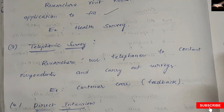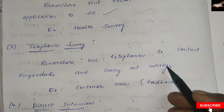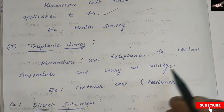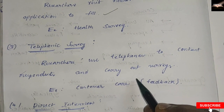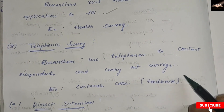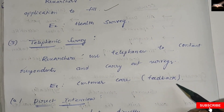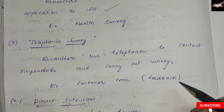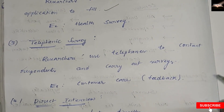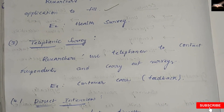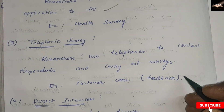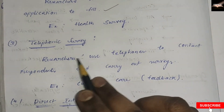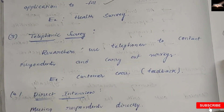Telephonic survey: researchers use telephones to contact respondents and carry out surveys. For example, customer care calls where they ask for feedback — 'How is our service?' — asking for feedback. This is also a telephonic survey.